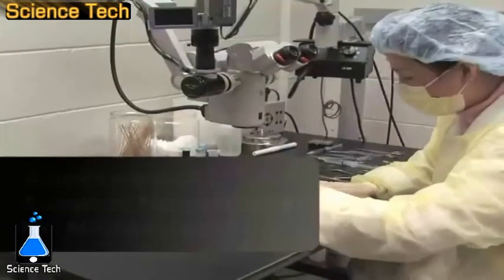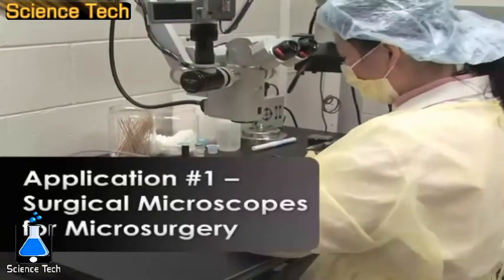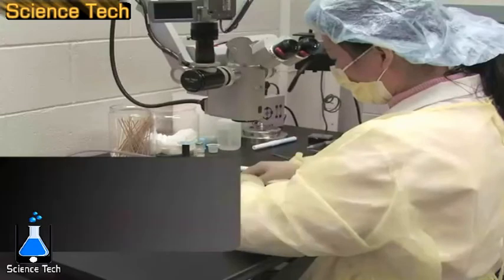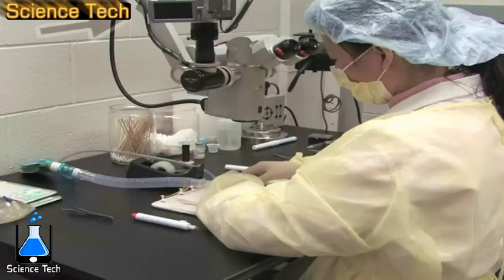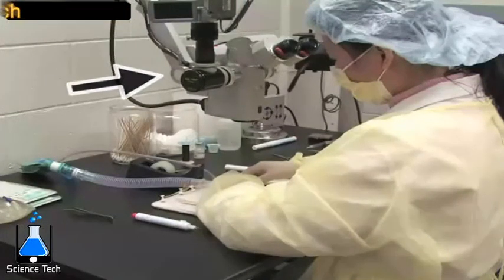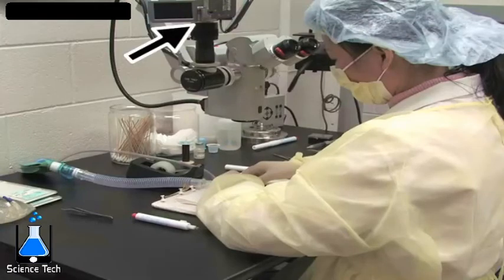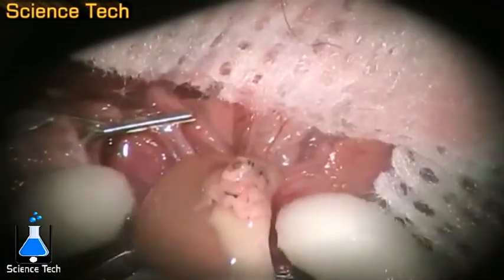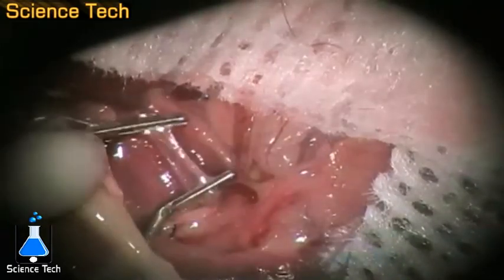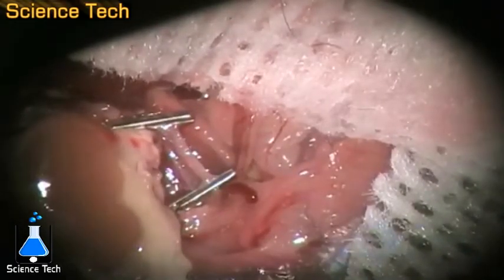Here you see a researcher preparing to work under a surgical microscope. These microscopes are generally suspended on a movable arm and are stereoscopic meaning that they allow light to pass to the viewer and also a camera mounted on the microscope. The surgical microscope is being used here in a kidney transplantation procedure in mice.